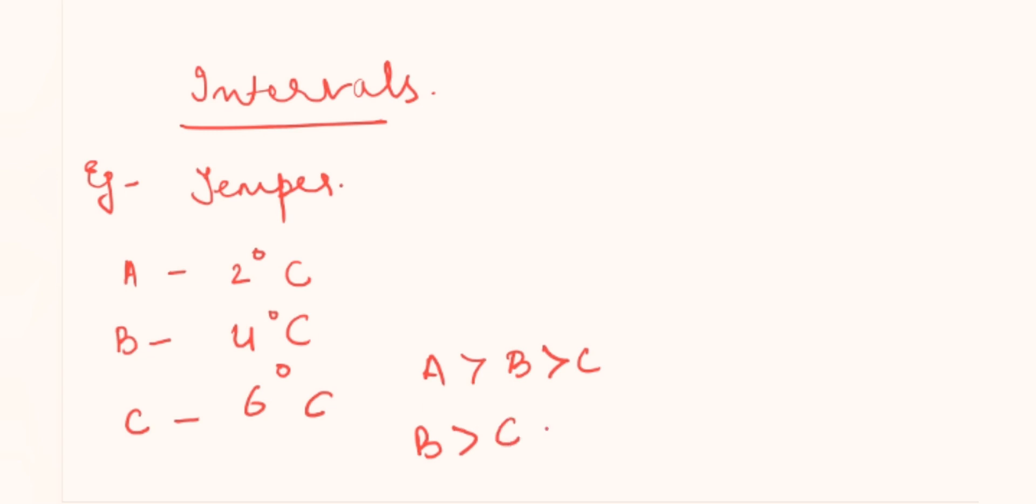Now we will discuss about the intervals with an example. Temperature: 2 degree, 4, 6 degree Celsius. I can say A's temperature is more than B and C. B is more than C.